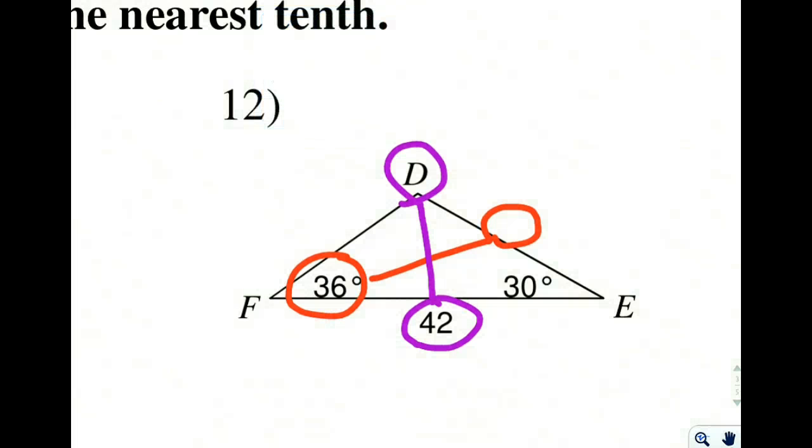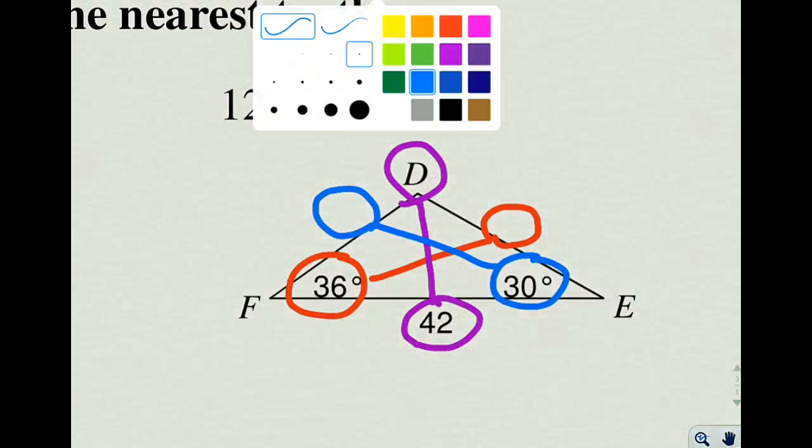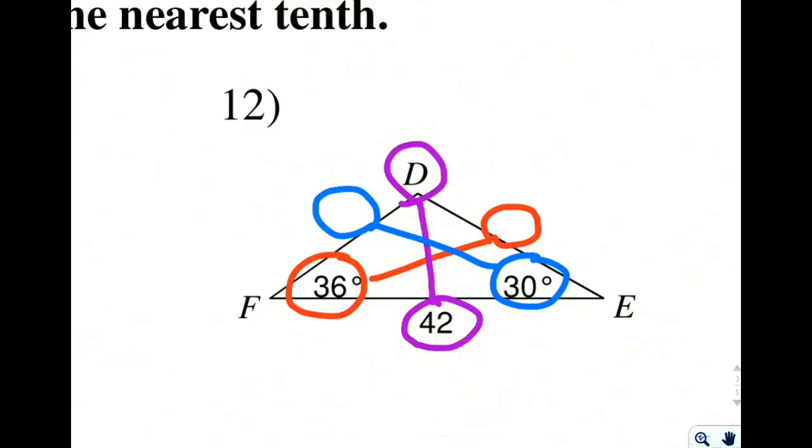And then an angle here, and an opposite side which is unknown. So it looks like when we set this up, we have no pairs, which is a big problem. We need at least one pair in order to solve it. We can't have two unknowns and be able to figure out the answer.